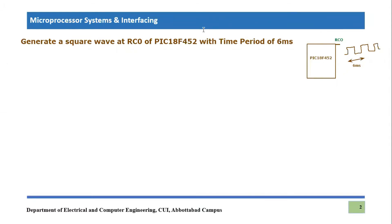The task we have to do is generate a square wave at RC0 of the PIC18F452 microcontroller with a time period of six milliseconds. A square wave means the duty cycle should be 50 percent, and the complete time period of a single cycle should be equal to six milliseconds. So half the time will be dedicated for on time and half for off time — three milliseconds on and three milliseconds off at RC0.